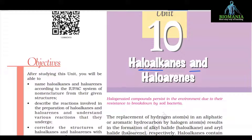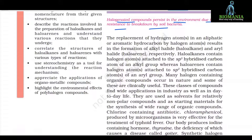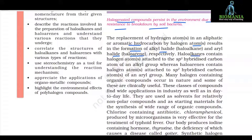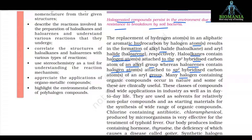That is Unit 10, Haloalkanes and Haloarenes. Halogenated compounds persist in the environment due to their resistance to breakdown by soil bacteria. The replacement of a hydrogen atom in an aliphatic or aromatic hydrocarbon by halogen atoms results in the formation of alkyl halide, i.e. haloalkane, and aryl halide, i.e. haloarene respectively. Haloalkanes contain halogen atoms attached to the sp3 hybridized carbon atom of an alkyl group, whereas haloarenes contain halogen atoms attached to sp2 hybridized carbon atom of an aryl group. Many halogen-containing organic compounds occur in nature and some of these are clinically useful.